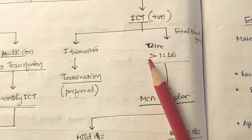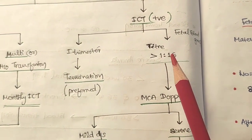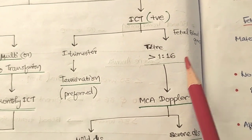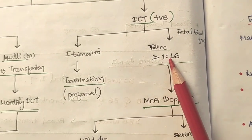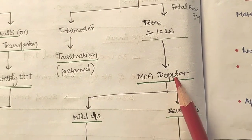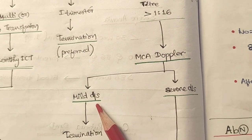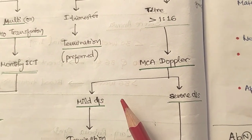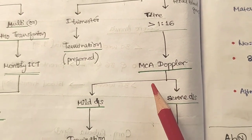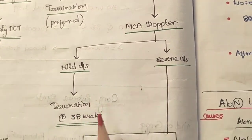If the patient is in the second or third trimester and the antibody titer is more than 1:16 — indicating significant maternal antibody response against fetal blood — we assess using MCA Doppler (middle cerebral artery Doppler). We evaluate flow patterns: whether there is reduced flow, absent flow, or reversal of flow.